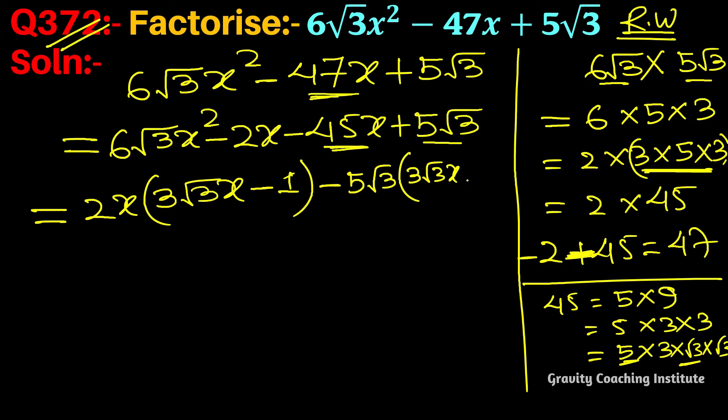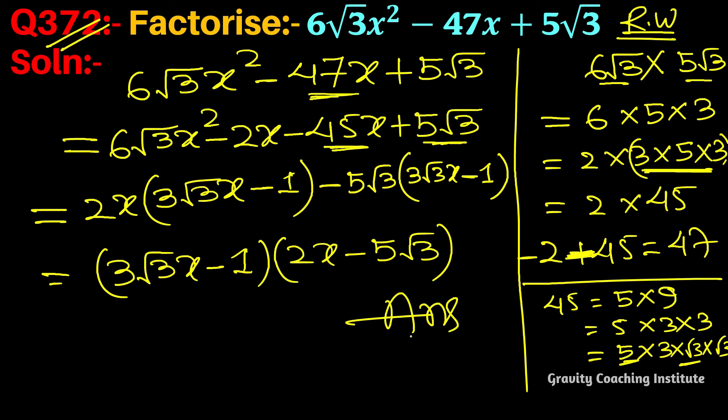5√3 is common, so the last term is 1. Now 3√3x - 1 is common, so the first term is 2x and the last term is 5√3, which is the required answer.